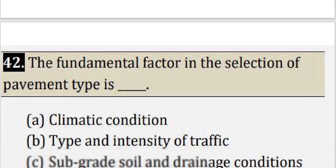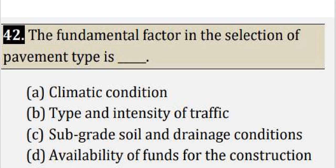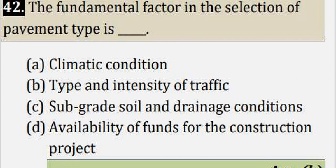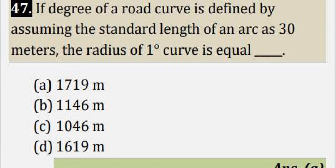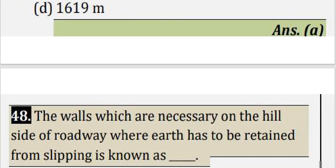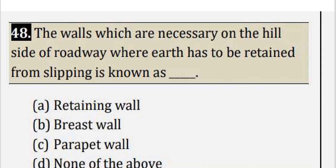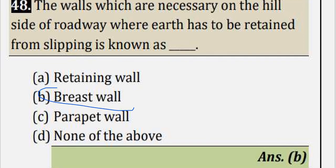Question number 42: The fundamental factor in selection of pavement type is the intensity and type of traffic, because traffic influences pavement type selection. Next, question number 47: If degree of road curve is defined by assuming standard length of arc as 30 meters, the radius of one degree curve is 1719 meters. Question 48: The walls which are necessary on hillside of roadway where earth has to be retained from slipping is known as breast wall, option B.